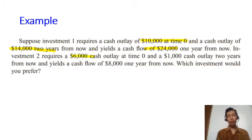Investment two requires six thousand dollars cash outlay at time zero and one thousand cash outlay two years from now. And it gives you eight thousand dollars one year from now. Which investment would you prefer?